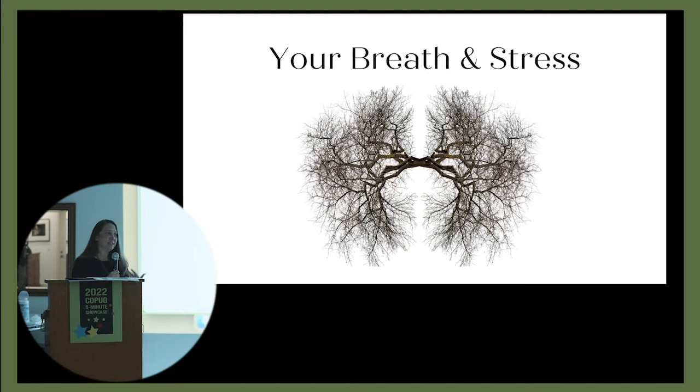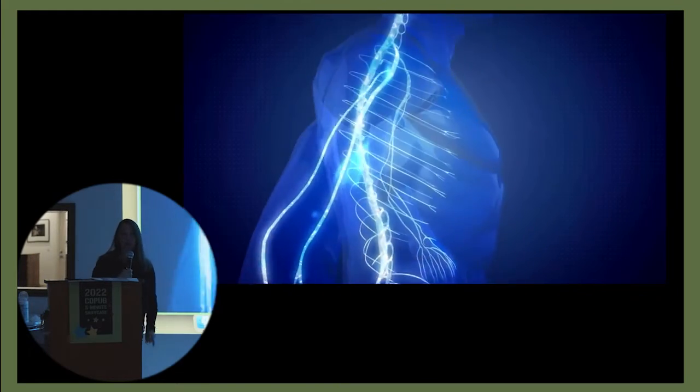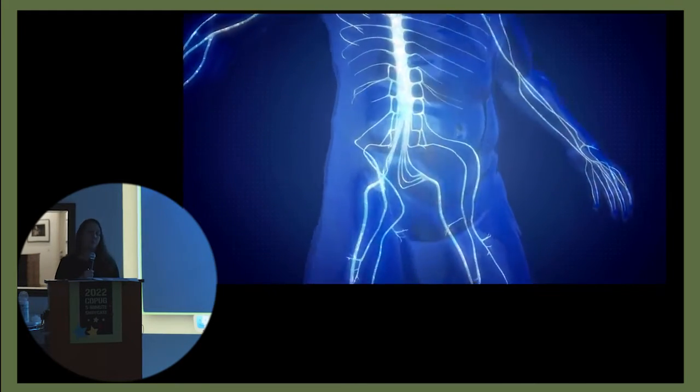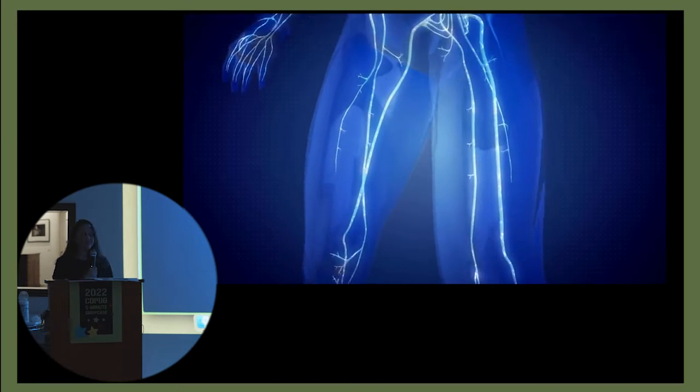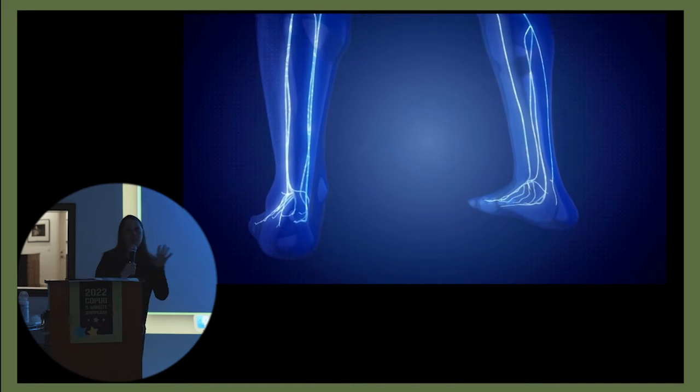We have this central nervous system in our body that controls absolutely every element of our life, from our brain all the way down to our toes. But there's two elements of the system that I want to talk about, and that's the parasympathetic nervous system and the sympathetic nervous system. But I'm going to call them your fight or flight and your rest and digest.